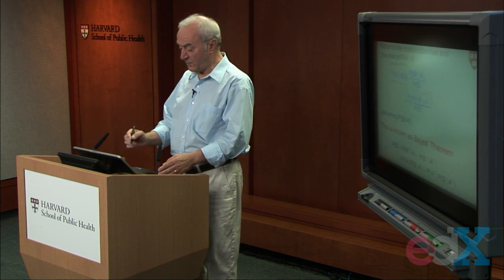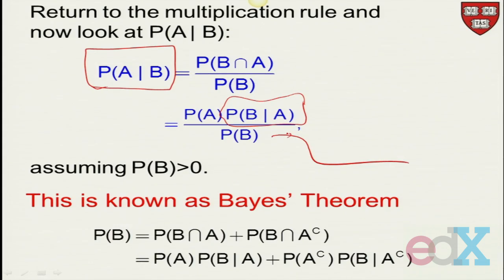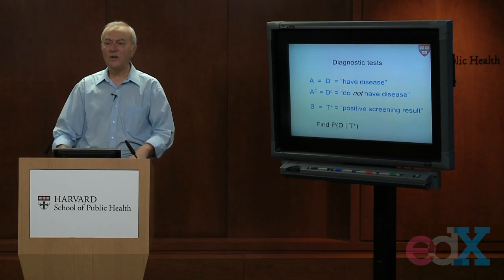Now, sometimes it's not expressed this way. Sometimes we expand the numerator. So instead of P of B, we expand it to be P of B and A plus P of B and A complement, and then we write it out more fully. But the beauty of it is that we've reversed the roles of what we're conditioning on. And where we use this, we'll use it right away, is in diagnostic tests.